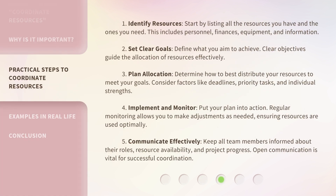1. Identify resources: Start by listing all the resources you have and the ones you need. This includes personnel, finances, equipment, and information. 2. Set clear goals: Define what you aim to achieve. Clear objectives guide the allocation of resources effectively. 3. Plan allocation: Determine how to best distribute your resources to meet your goals. Consider factors like deadlines, priority tasks, and individual strengths.